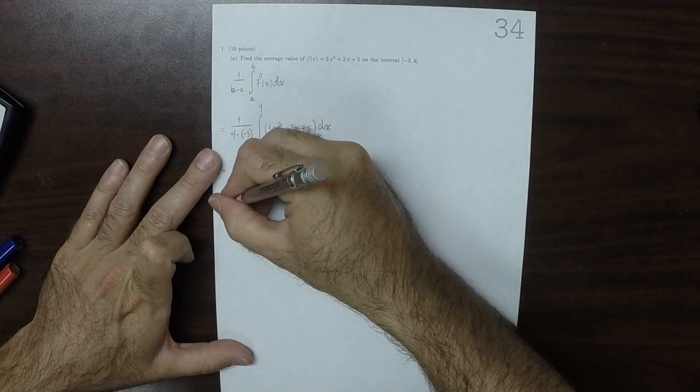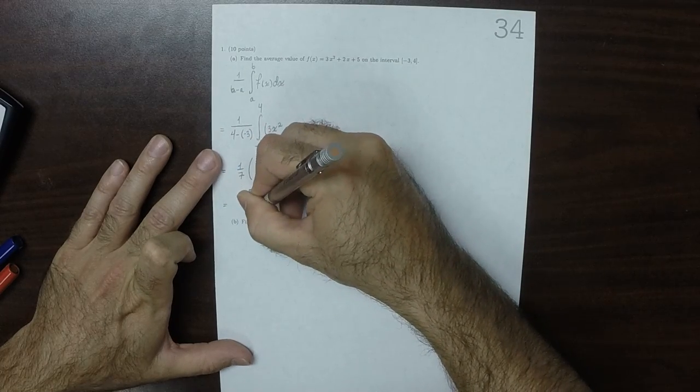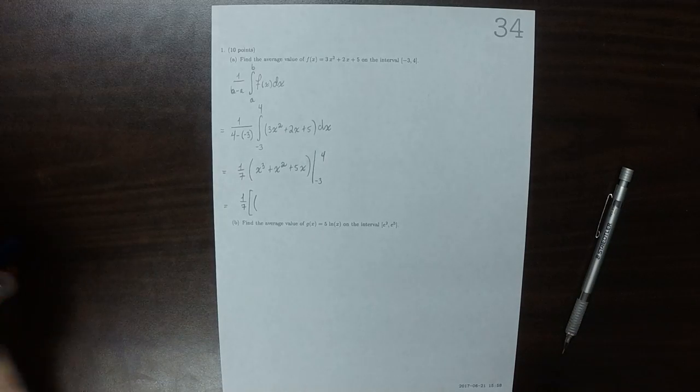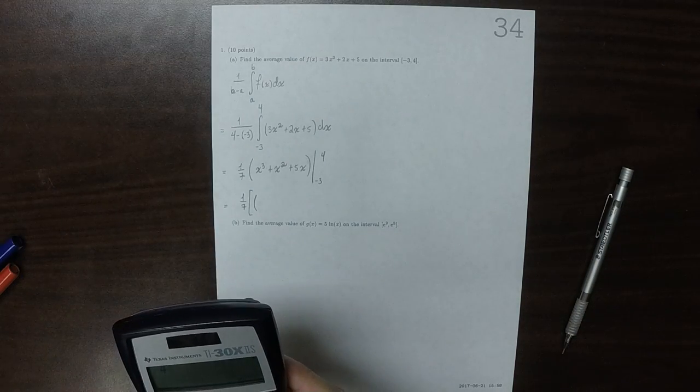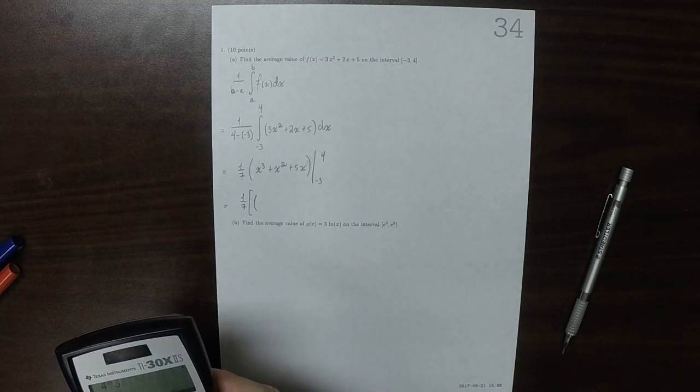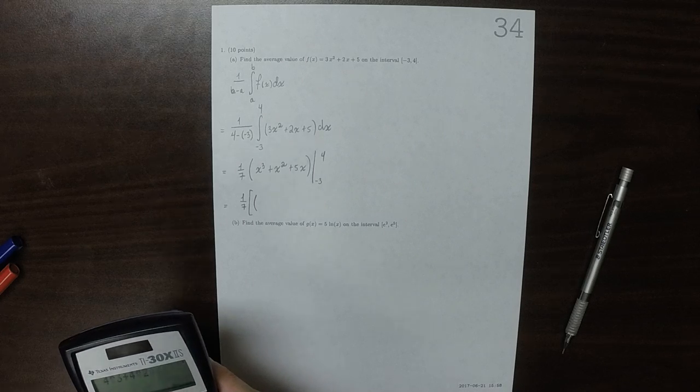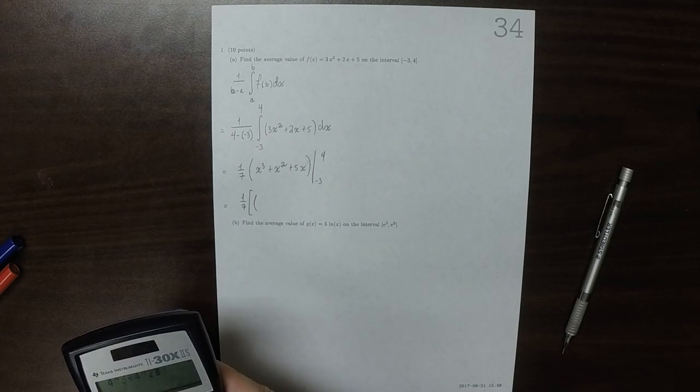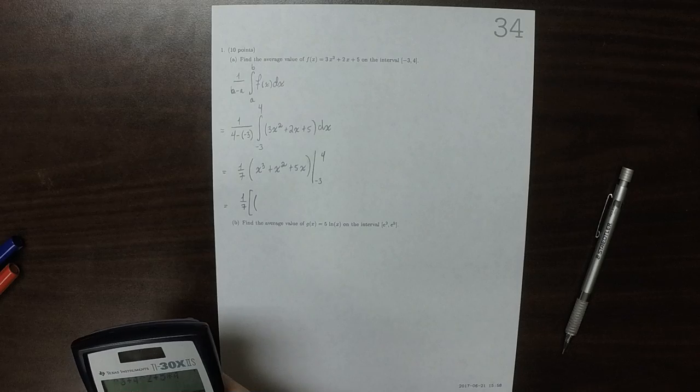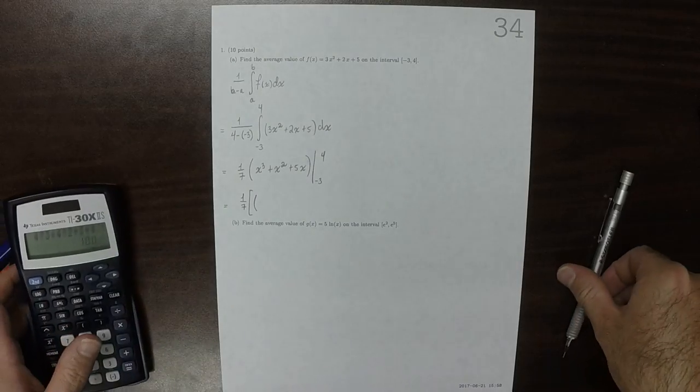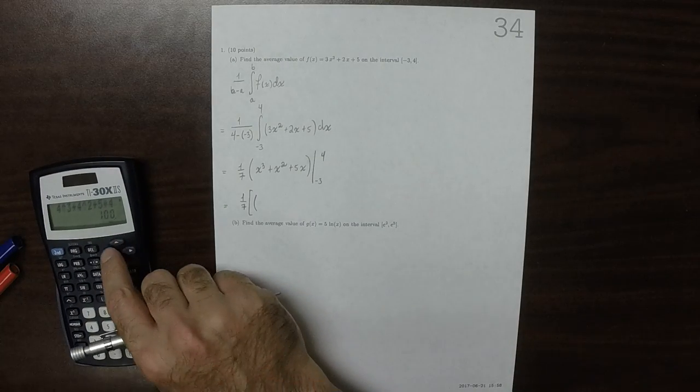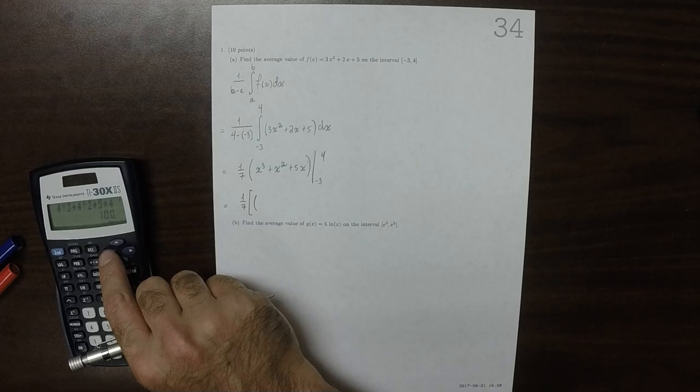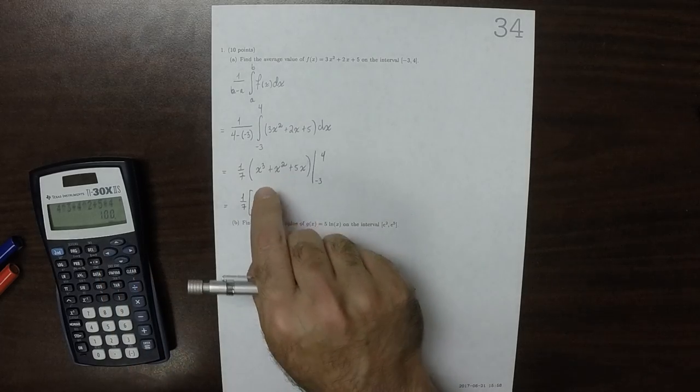So that would be 1/7th. And then plugging in 4, so that would be 4 cubed plus 4 squared plus 5 times 4. That's 100, is that right? 64 plus 16, okay.